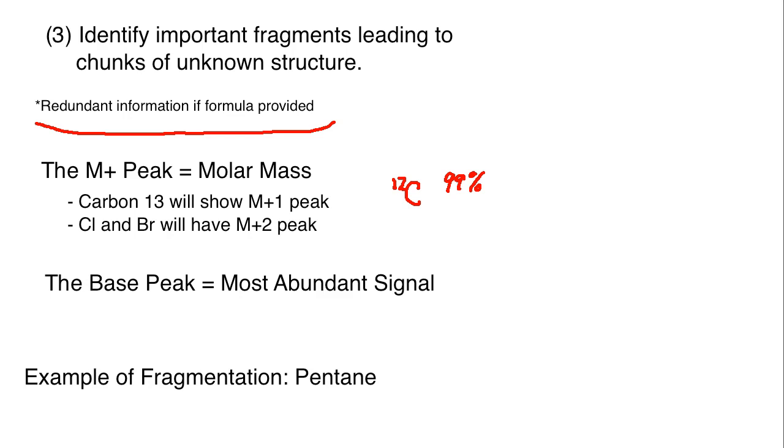About 99% of all carbon in a compound is going to be carbon-12, but approximately 1%, and these are approximate because there's also carbon-14, but approximately 1% is going to be carbon-13.